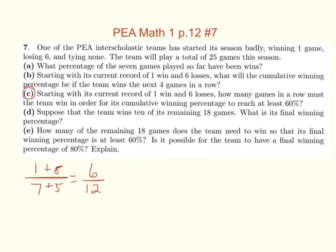And I think we end up figuring out, if we win eight in a row — through guessing and checking — you get nine out of 15, and nine out of 15, is that 60%? Yes, exactly 60%. So they would have to win eight more games in a row.